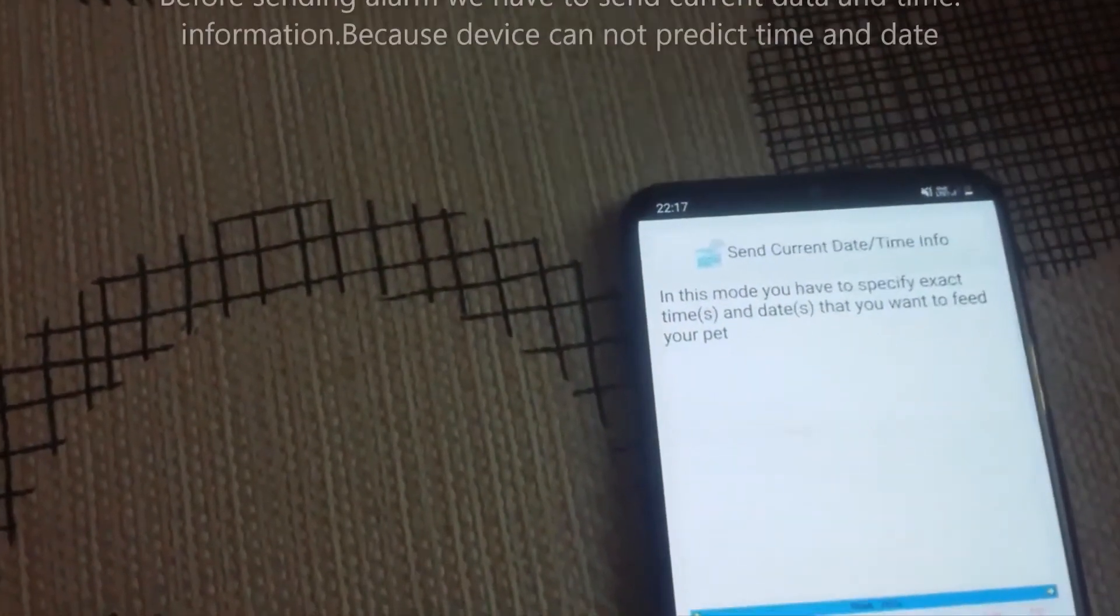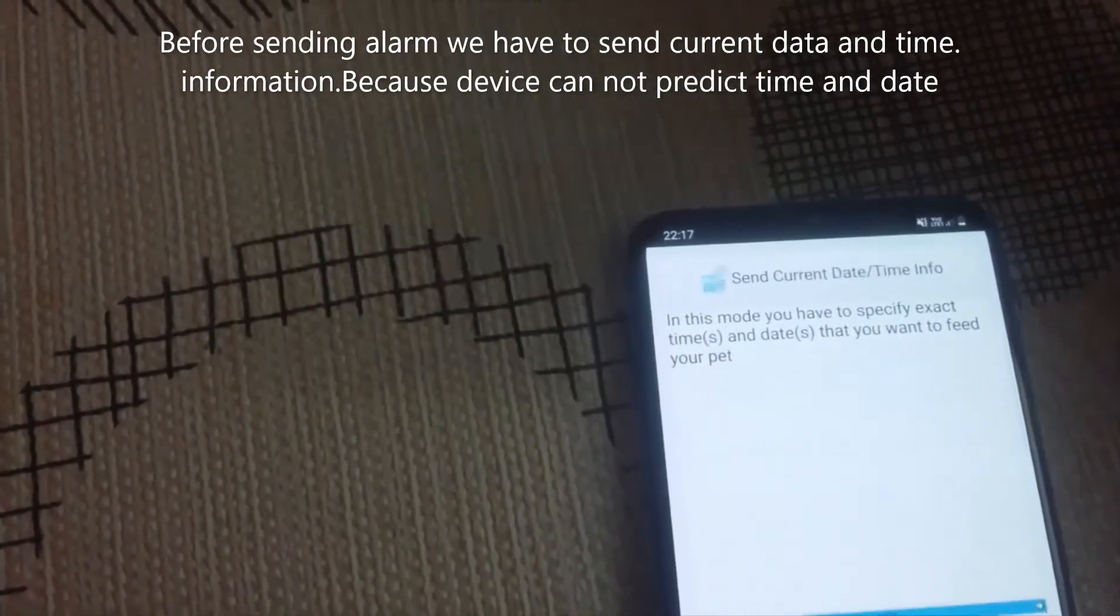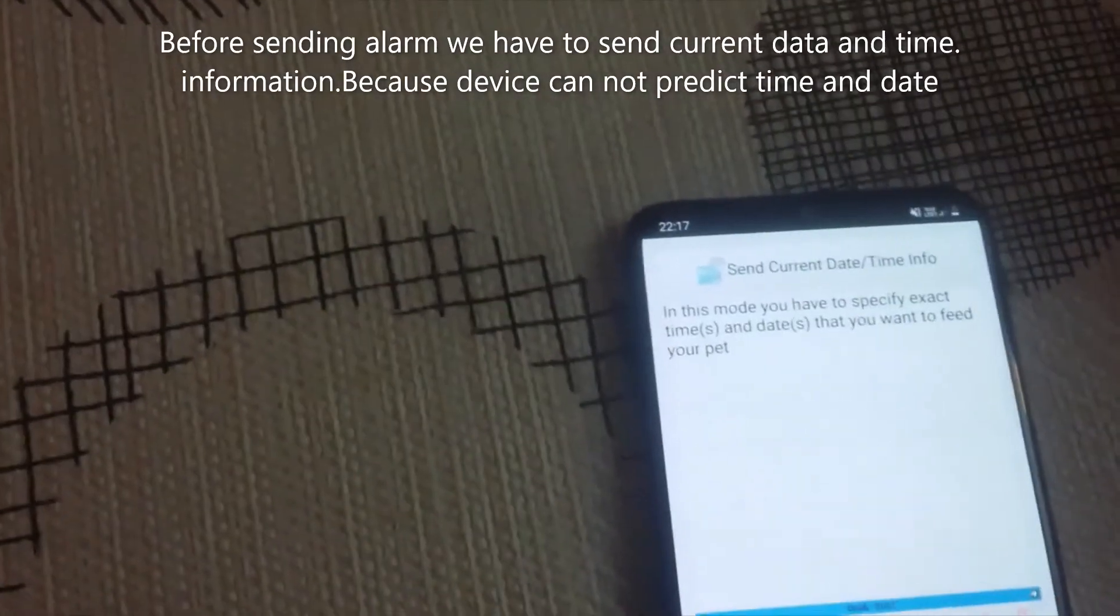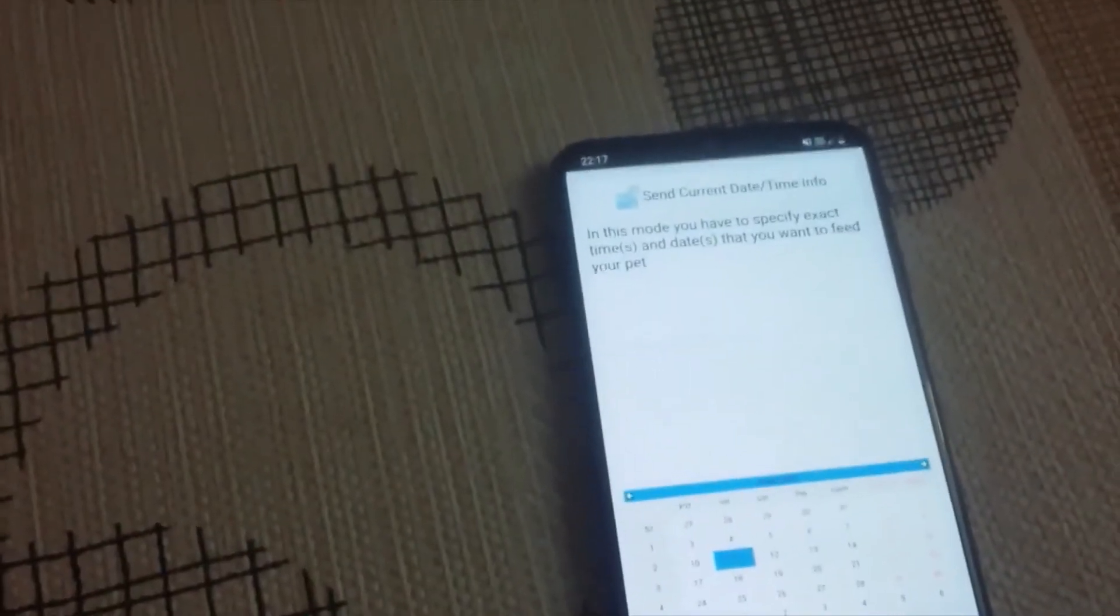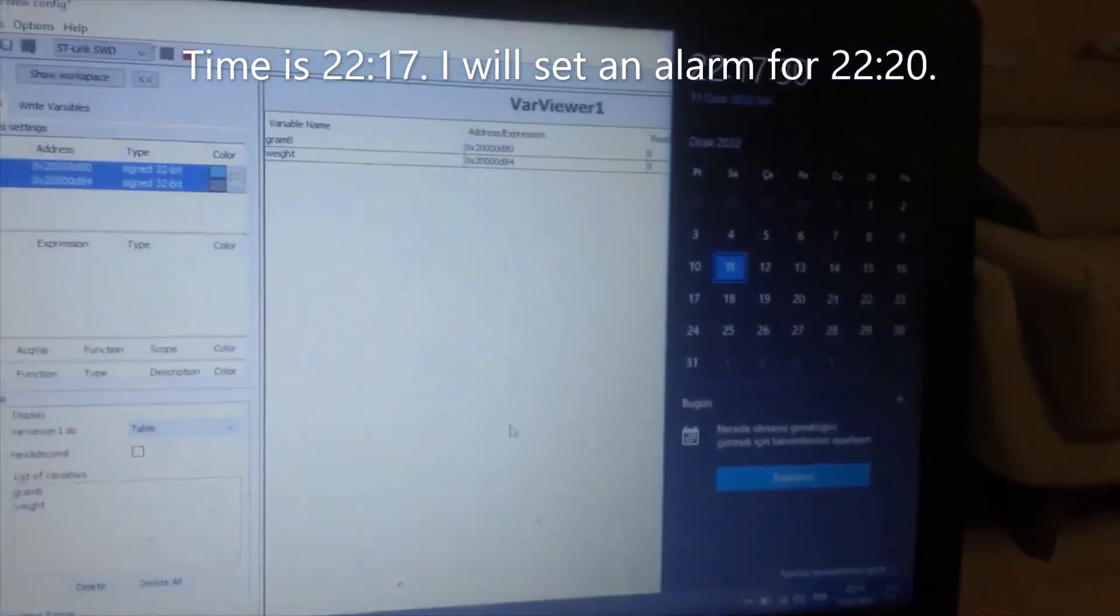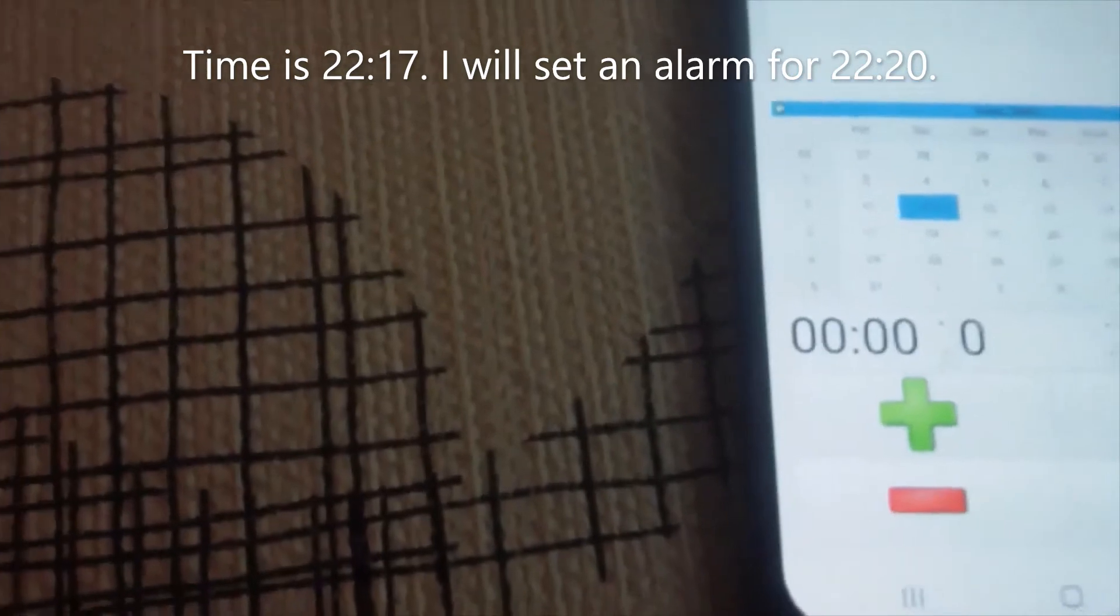Before sending the alarm, we have to send current date and time information, because the device cannot predict time and date. The time is 22:17. I will set an alarm for 22:17.